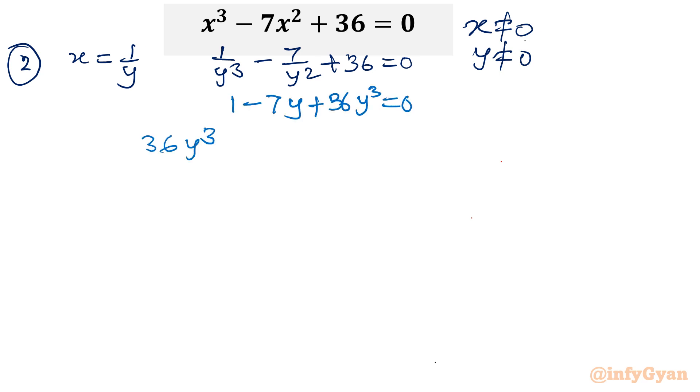I will multiply this equation by y³. The equation becomes: 1 - 7y + 36y³ = 0. In descending order of powers: 36y³ + 0y² - 7y + 1 = 0.